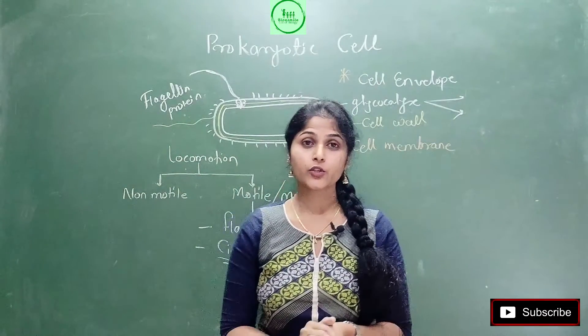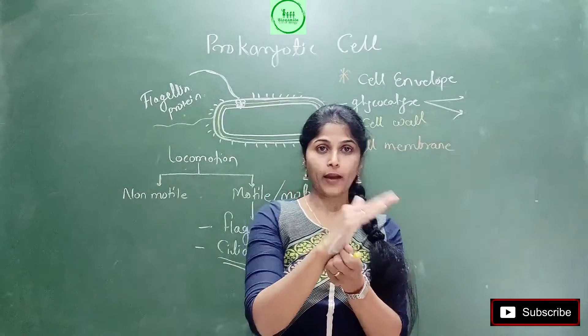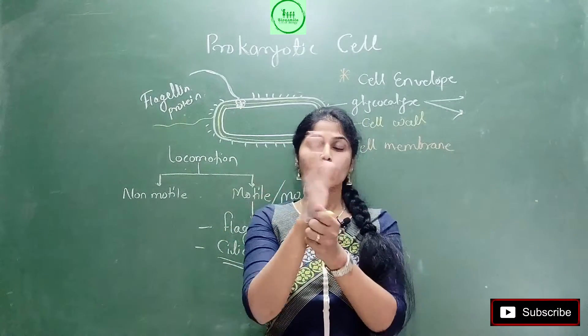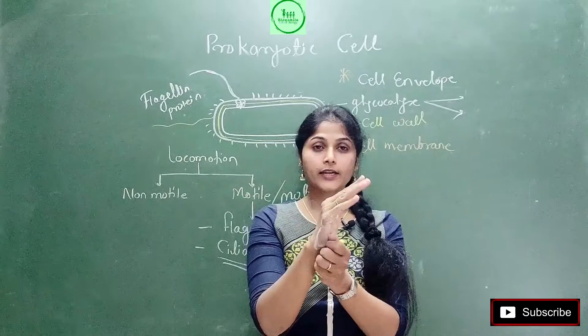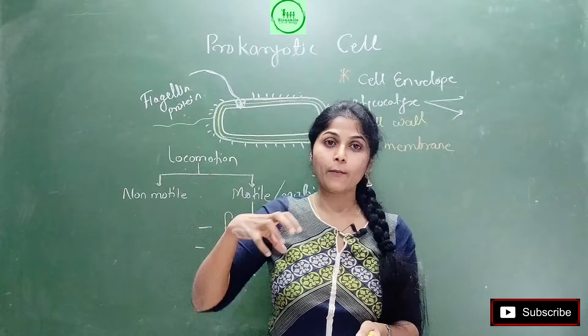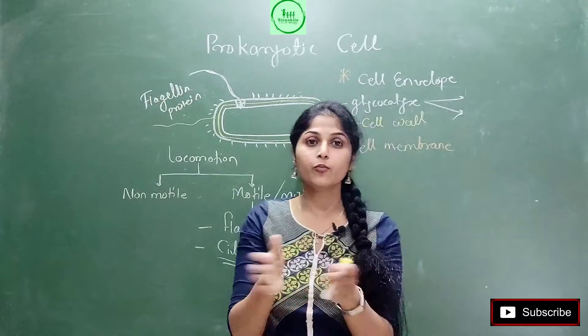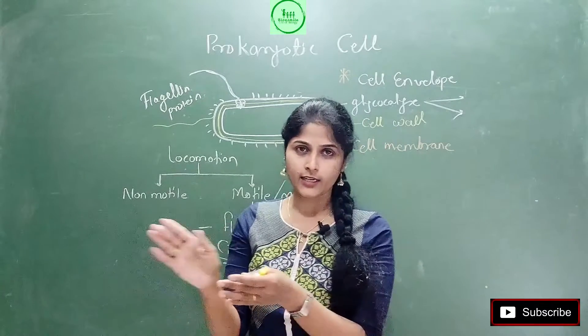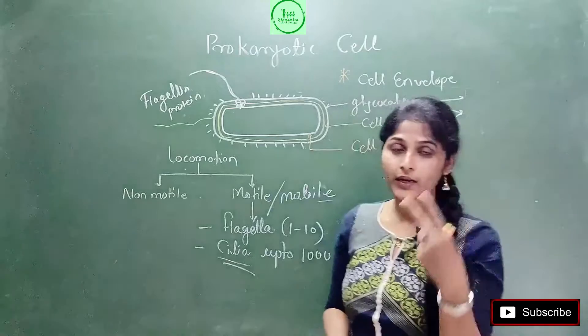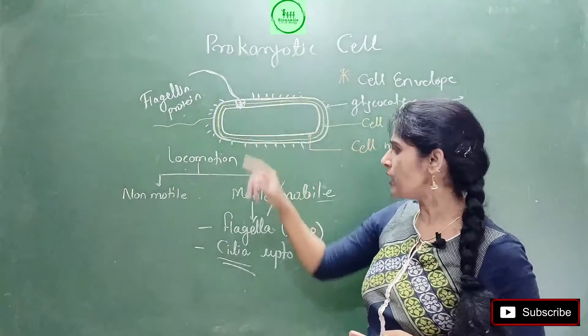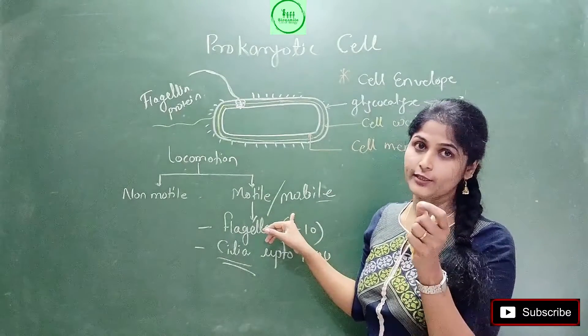And this cilia, they do a movement that is called backward-forward, backward-forward. It's like wipers - like the car wipers move, in that form cilia move. Ultimately, in the surrounding environment, current is created there, force is generated, and because of that force the bacteria is pushed, meaning it goes forward.